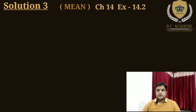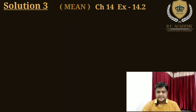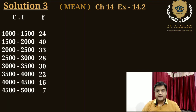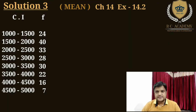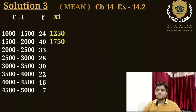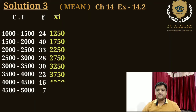Solution 3: mean by step deviation method. Is method mein class interval given hai, frequency given hai. Hum sabse pehle xi nikaalenge — xi is found by (lower limit + upper limit) / 2. Toh is question ke liye xi (mid values) kya hongi? 1250, 1750, 2250, 2750, 3250, 3750, 4250, 4750.